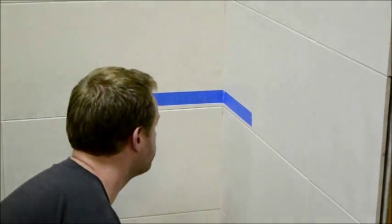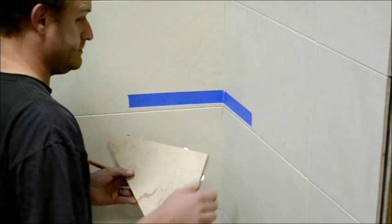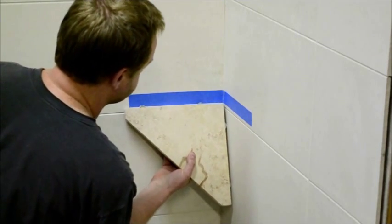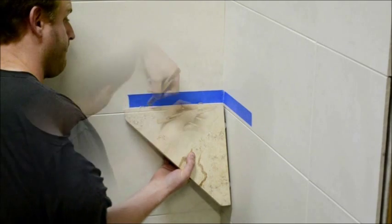Then, holding the shelf up to the wall, mark four 1 inch wide spaces where each tab will be inserted into the grout.